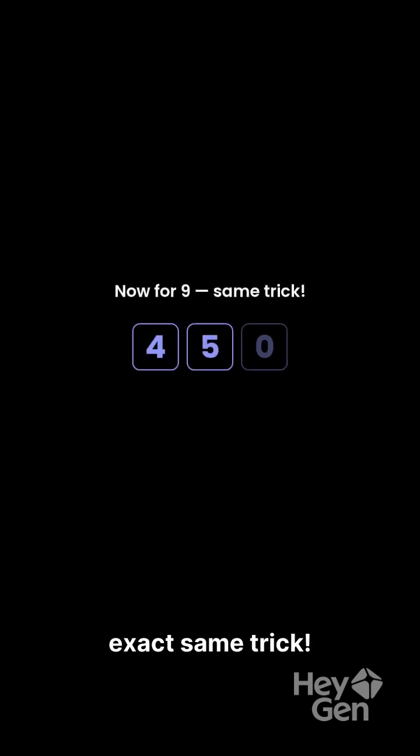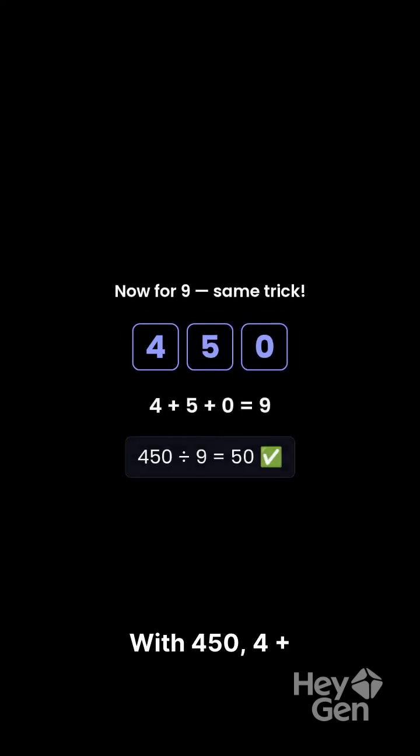For 9, it's the exact same trick. Add the digits together. With 450, 4 plus 5 plus 0 gives you 9. Because 9 is divisible by 9, 450 is also divisible by 9.